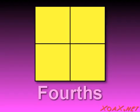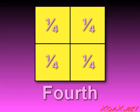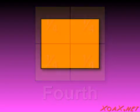We can divide a square into four equal pieces, and these pieces are smaller squares called fourths, since they are four equal pieces and each one is one-fourth of the size of the original square.